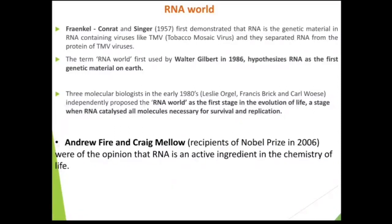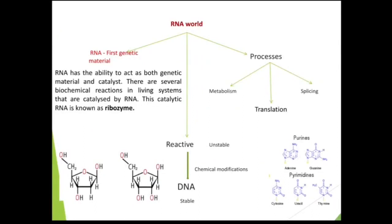In 2006, they got the Nobel Prize for this. RNA is the first genetic material on earth. RNA is acting as both genetic material as well as a catalyst. In living organisms, several biochemical reactions are catalyzed by RNA. This catalytic RNA is known as ribozyme.